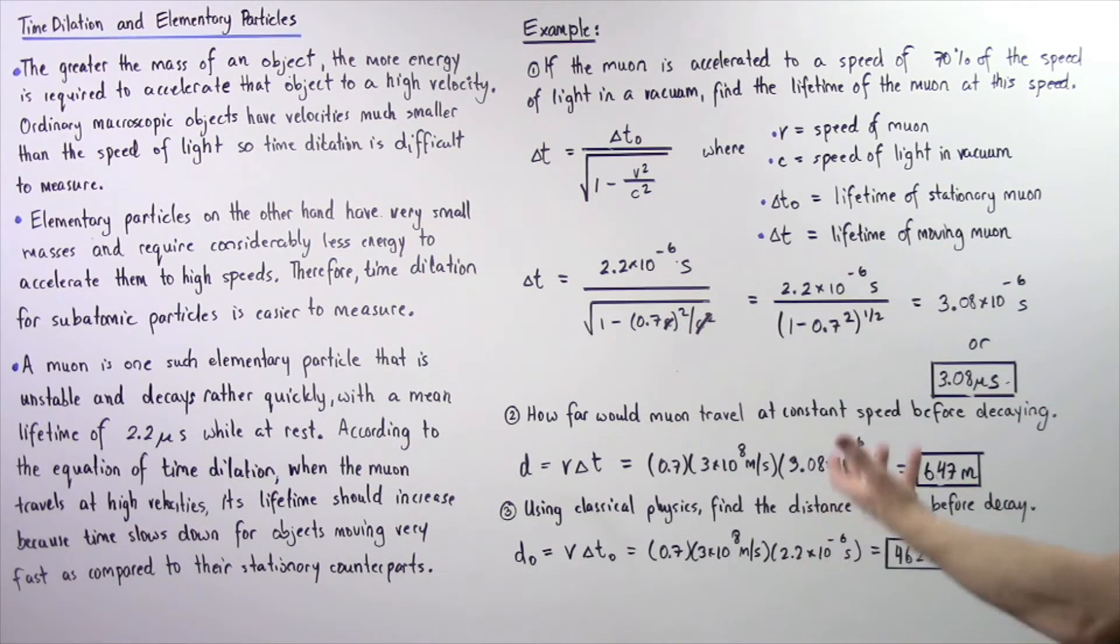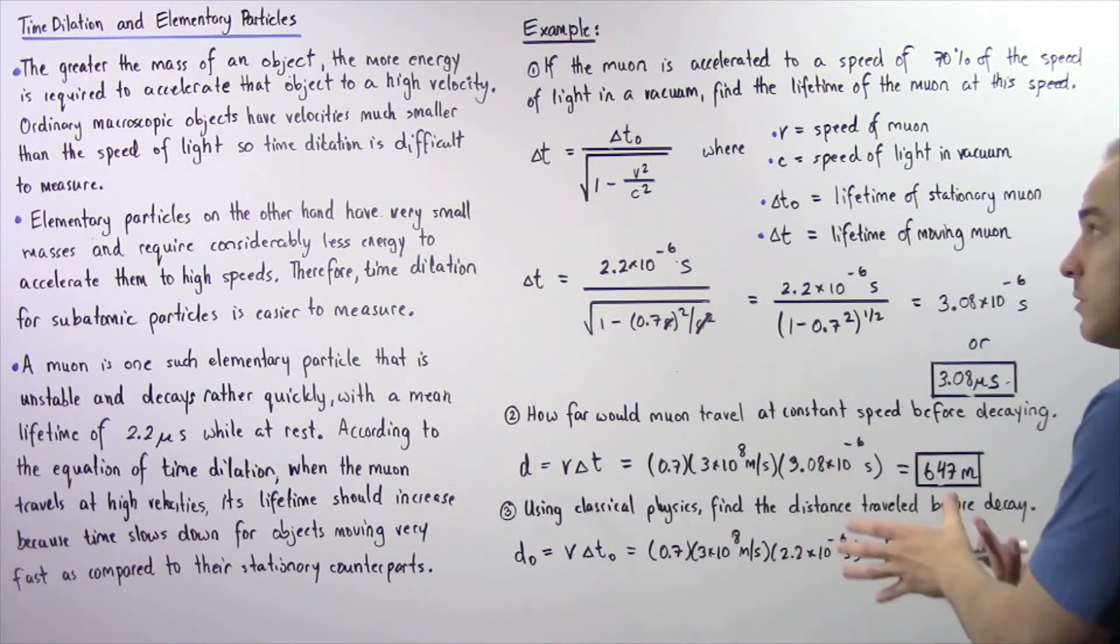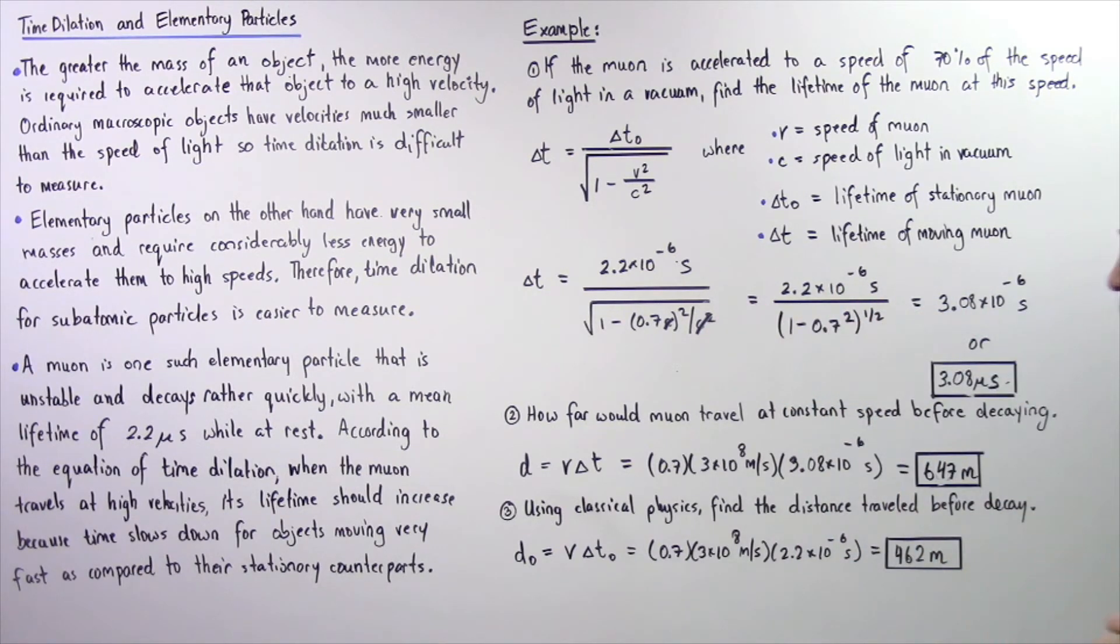How far would the muon travel at a constant velocity v before actually decaying? So we want to apply the time dilation principle.